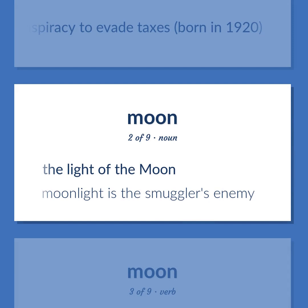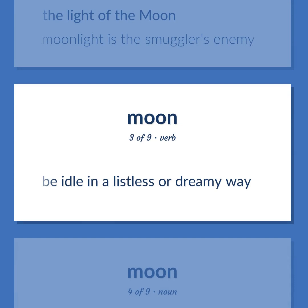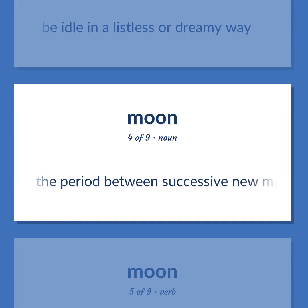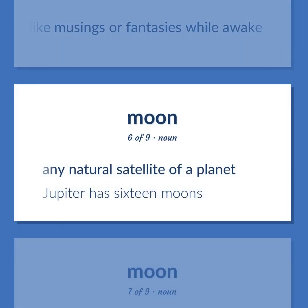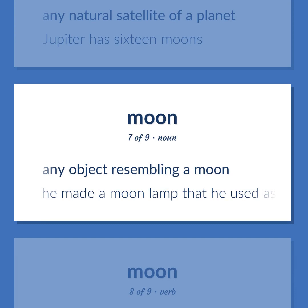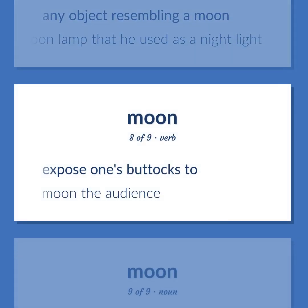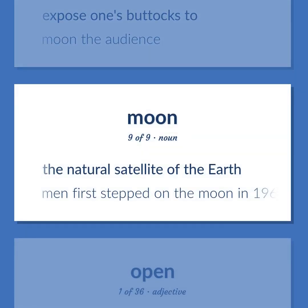Moon: The light of the moon. Moonlight is the smuggler's enemy. Be idle in a listless or dreamy way. The period between successive new moons: 29.531 days. Have dreamlike musings or fantasies while awake. Any natural satellite of a planet; Jupiter has 16 moons. Any object resembling a moon; he made a moon lamp that he used as a night light. Expose one's buttocks to. Moon the audience. The natural satellite of the Earth; men first stepped on the moon in 1969.